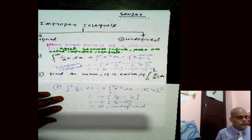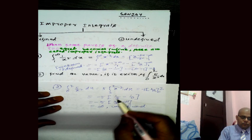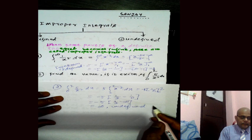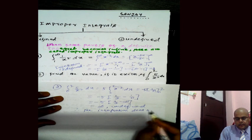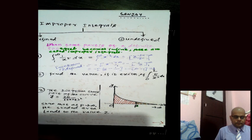In improper integrals, some values are defined and some are not. Even if we take the upper limit as infinity, then 1/infinity equals 0, so that part would be defined. But 1/0 equals infinity, so that part is not defined. Therefore, the integration does not exist.